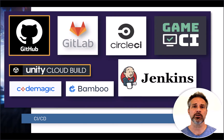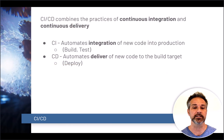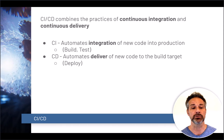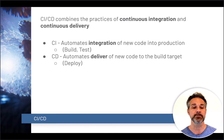The two most relevant to this video are GitHub to host the repo and Unity Cloud Build as the tool that will do the building and testing. CICD combines the practices of continuous integration and continuous delivery. The integration is about putting your new code into production — that includes testing it, building it, and getting it into the codebase. Continuous delivery automates the delivery of that code to the build target, putting it into the hands of your end users.